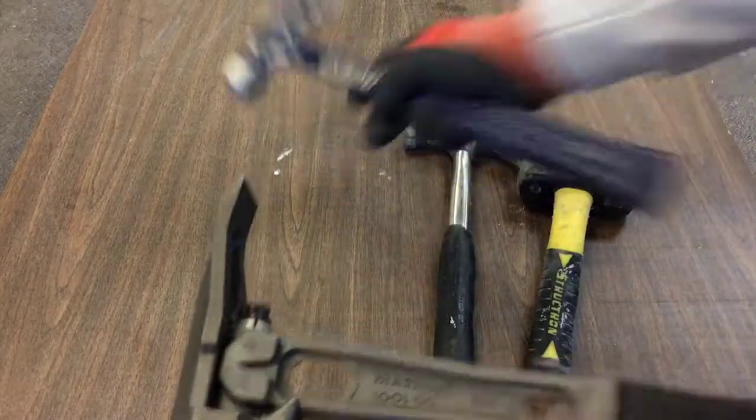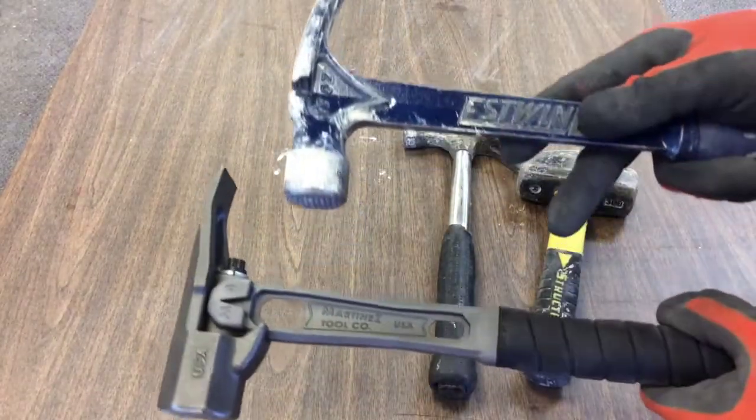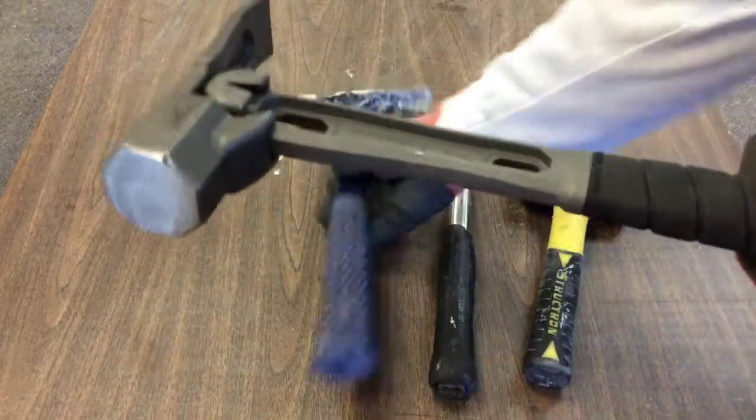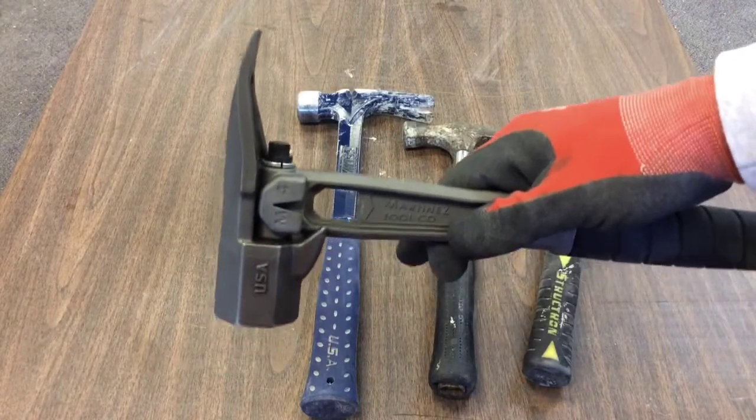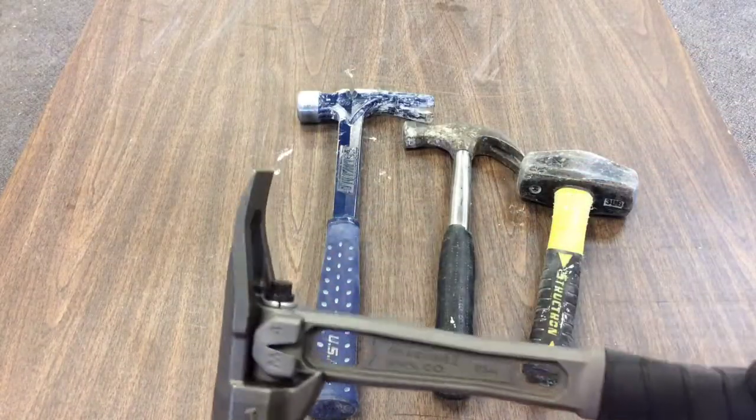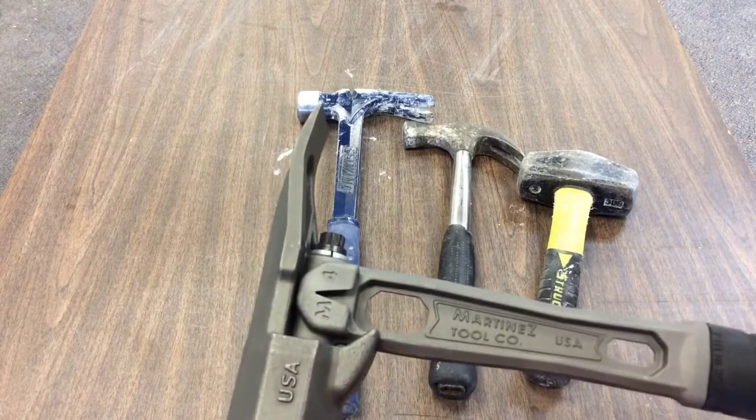This is a 19-ounce S-Wing for comparison. This comes in at 2 pounds, 10 ounce total, very nice balance. Love the side nail puller.